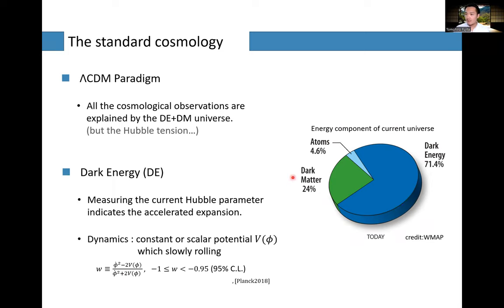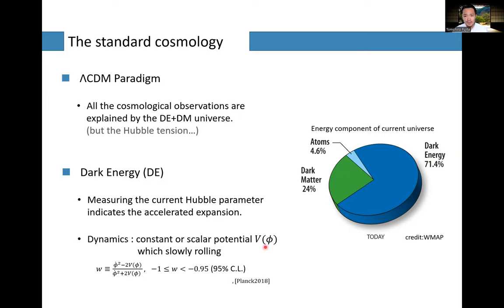Basically 25% of our universe is occupied by dark matter and 70% by dark energy. We don't know well what they are, but we're pretty sure they exist. Dark energy is especially mysterious — it could be just a constant in Einstein's equation, the cosmological constant, but it can be a dynamical degree of freedom, maybe a scalar field slowly rolling down its potential.